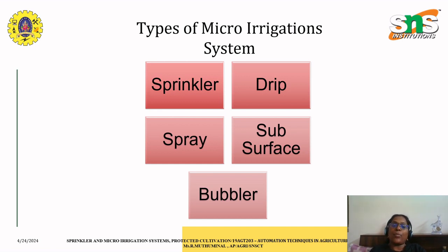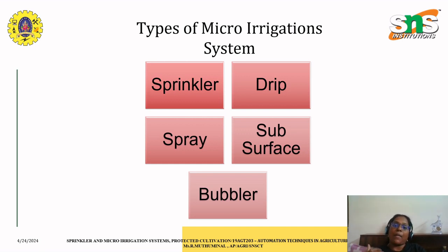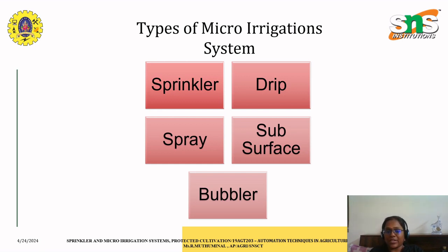The last one is the subsurface irrigation system, which delivers water directly to the root zone of plants underground. Unlike the above four systems which operate above the ground surface level, this system transfers water under the subsurface, that is, below the root zone. It is typically done through buried pipes, tubes, and drip lines. The advantages associated with sprinkler and drip irrigation also play a vital role here — most of the benefits of surface irrigation systems are common to the subsurface irrigation system. That is what I have prepared for today's class. See you at the next class, thank you.